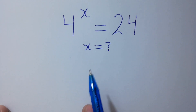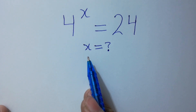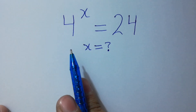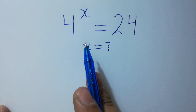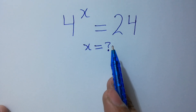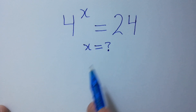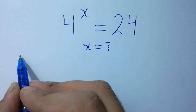Hello friends, find the value of x if 4 to the power x equals 24. Let's solve it.